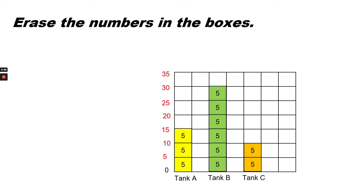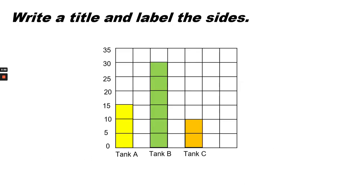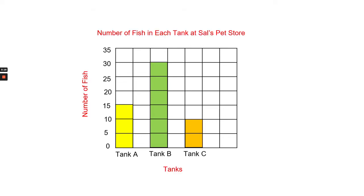Now that we have our scale, we can erase the numbers in the boxes. Write a title and label the sides. What should we call our bar graph? The title is number of fish in each tank at Sal's Pet Store. Our vertical label is number of fish and our horizontal label is tanks.